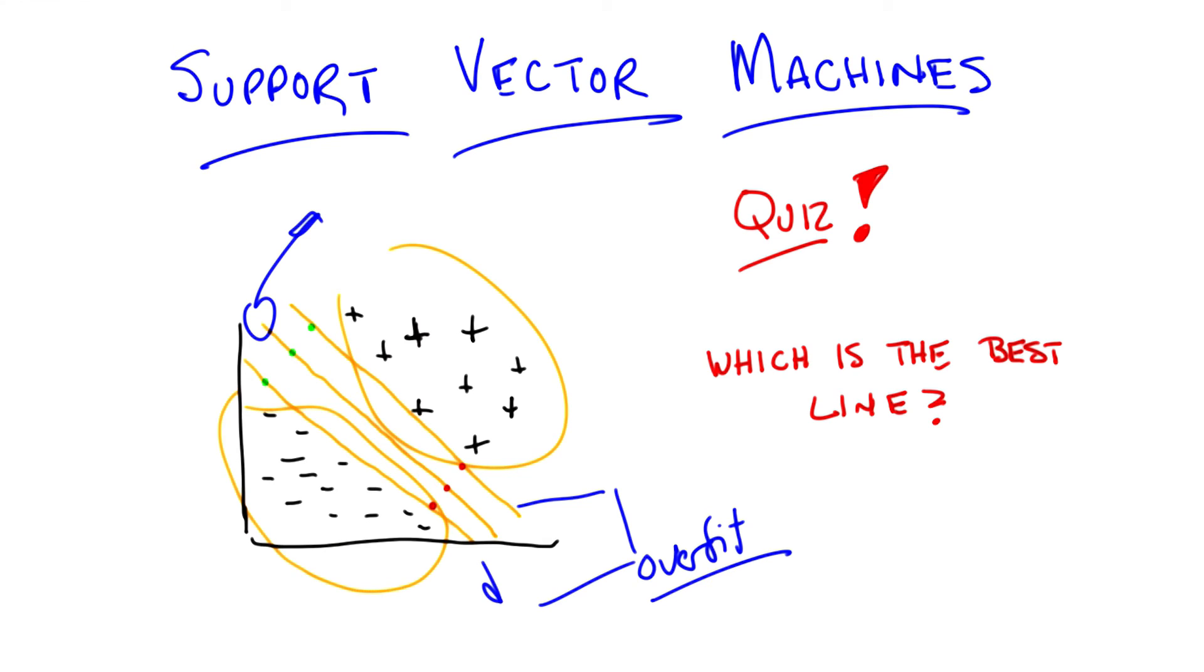It is funny though, because like overfitting up to this point, we were generally talking about overfitting as being something where there's a great deal of model complexity in some sense. And it doesn't seem like those lines that are closer to the pluses, or closer to the minuses, are inherently more complex, they're still lines. It's interesting that they kind of maybe behave as if they are.